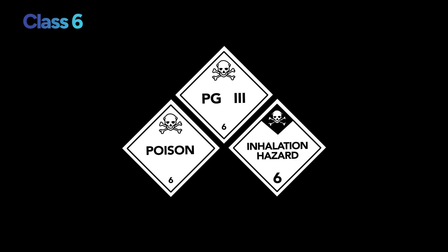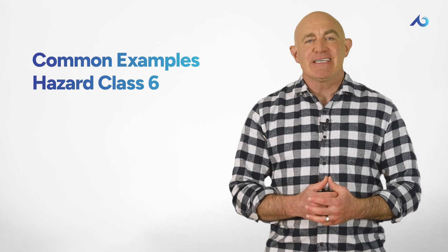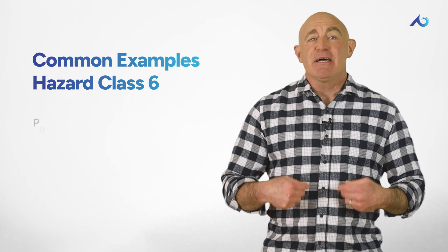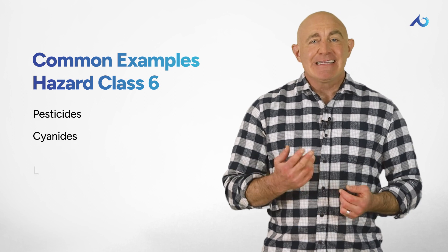Class 6 includes liquids and solids that are considered toxic enough to humans to cause a hazard to their health if exposed to the material. It also includes materials that have a pathogen that can cause disease in humans. Some common examples of hazard class six include some pesticides, cyanides, lead, and organic compounds including phenols and cresols.